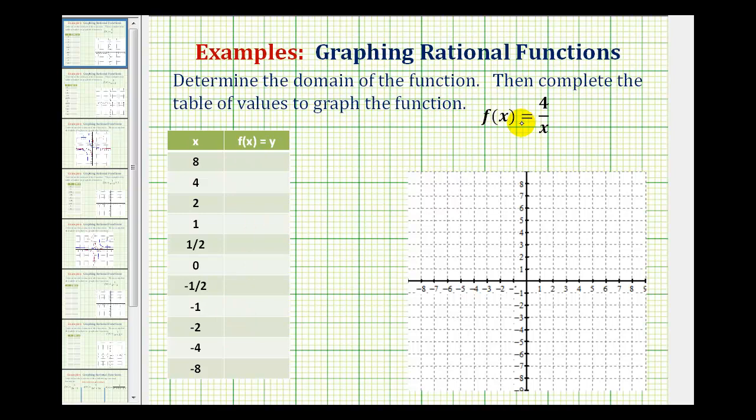The key to determining the domain of a rational function is to remember that division by 0 is undefined. So here we have 4 divided by x, so whatever values make the denominator equal to 0 cannot be in the domain. And since we have an x in the denominator, the domain will be all real numbers except x equals 0.